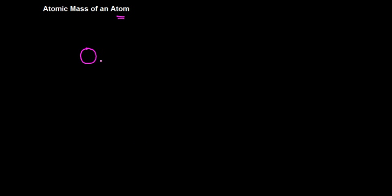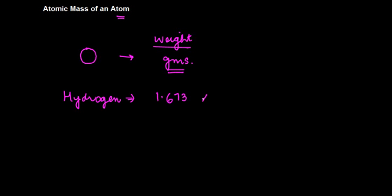Because they are so small, the weight if you actually take of an atom in terms of grams - that's the unit for measurement of weights - if I consider the weight of an atom in grams, it might be so small that you might just go mad. So let's say I'll give you an example here. If I talk about the weight of an atom of hydrogen, this basically is given by us as 1.673 times 10 to the power minus 24.